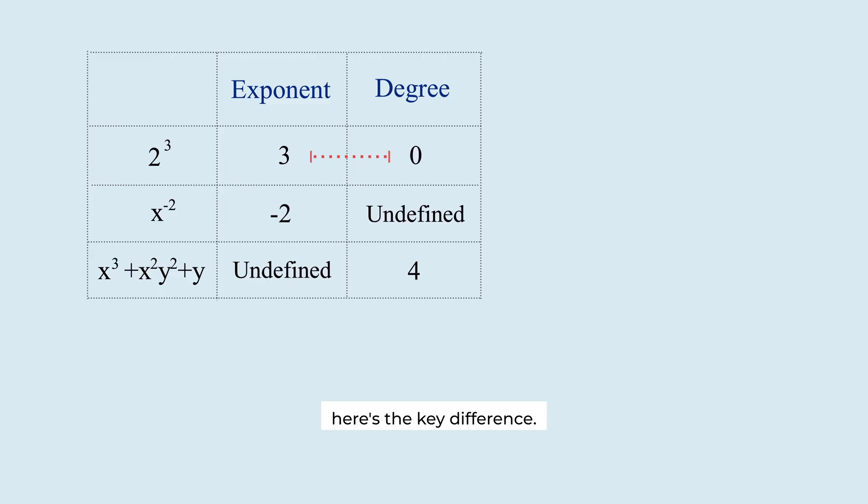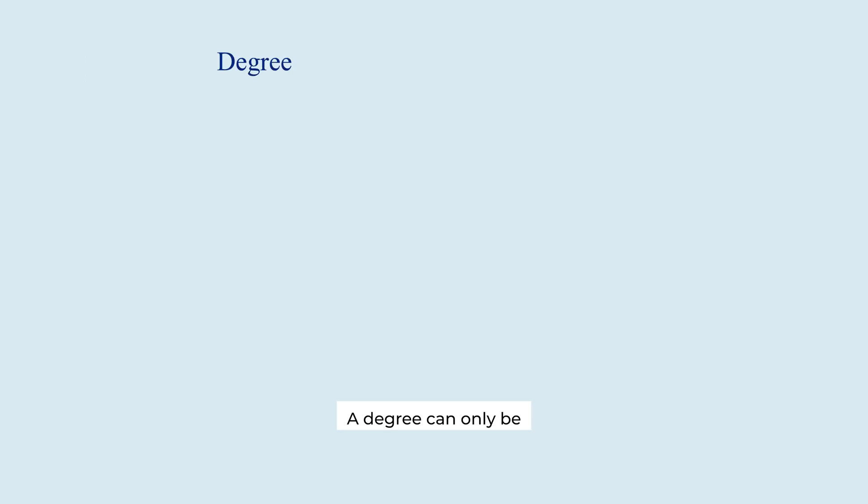Exponents and degrees. Here's the key difference. A degree can only be 0 or a natural number. On the other hand, an exponent can be any real number or even any complex number.